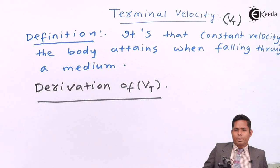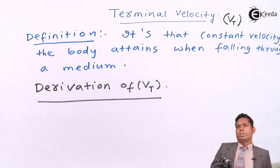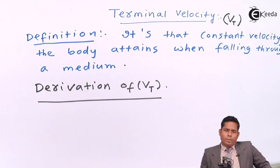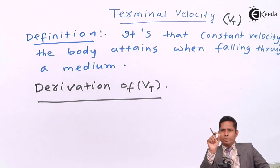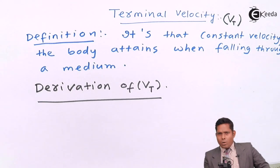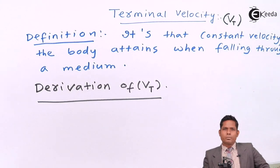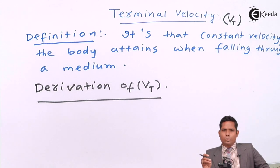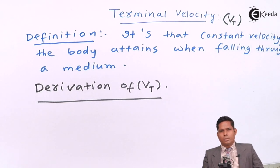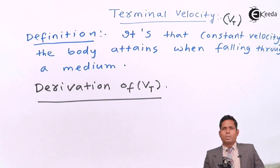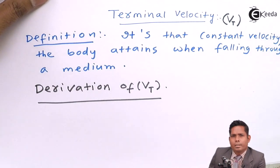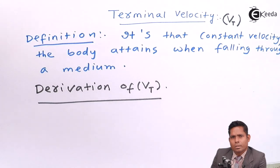As time passes, the speed of the sphere will keep increasing as it falls further under gravity. To attain terminal velocity, we assume that the medium is very, very long — meaning the object does not quickly hit the bottom. We assume a very long medium in terms of vertical distance, so the body gets sufficient time to attain terminal velocity. We consider a very long tube containing a liquid in which the sphere is released.